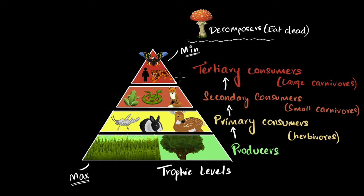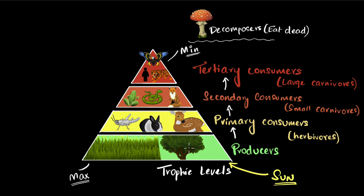Coming back to our main question: why do we see the most individuals at the bottom and fewer at the top, and why only four to five levels? It all has to do with energy. The reason we eat food is to get energy. Producers get their energy from the sun through photosynthesis — that's how they store energy. Primary consumers get energy by eating the producers, but studies have shown they only get about 10 percent of that energy.